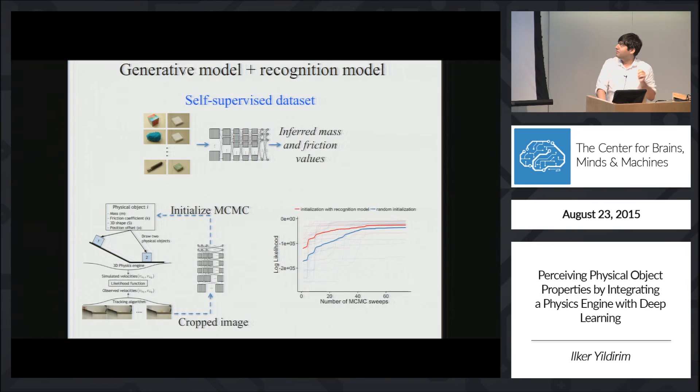And then when we test people and the model on a bunch of behavioral tasks that involve a prediction task, a comprehension task, and a transfer task, we saw that there is good agreement between the predictions made by the model and the judgments made by people.